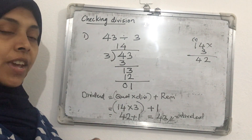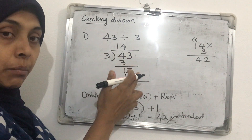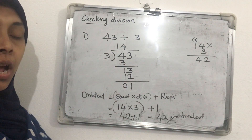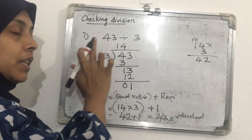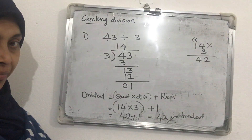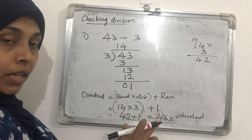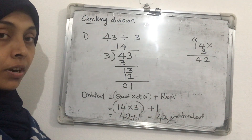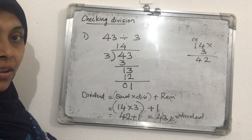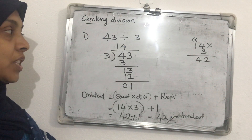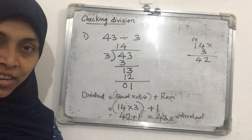This way we can check any division — whether it's a 2-digit or 3-digit number divided by a 1-digit number. After performing the check, if the result equals the dividend, the division is correct. If we get a different answer, the division is wrong and we need to re-correct our work. This is how all of you can check your division.